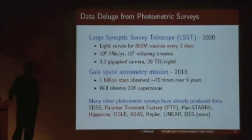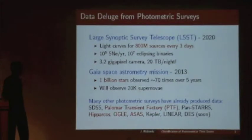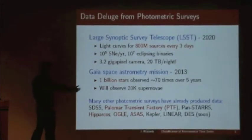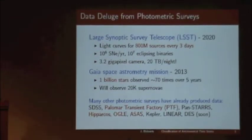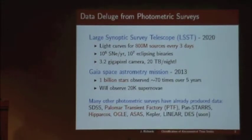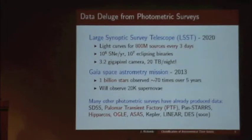It's 20 terabytes of data per night. Even before then, we're observing photometric data — brightness measurements of objects for billions of objects. Making sense of this information, especially when there are hundreds of classes of objects out there and trying to understand the best course of follow-up, is of utmost importance for us.